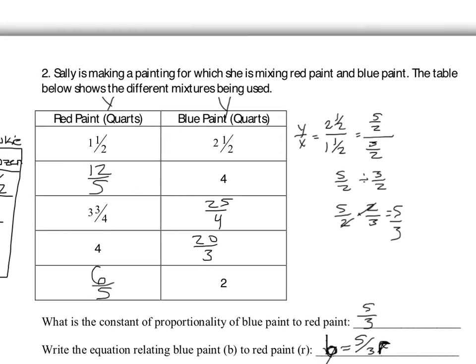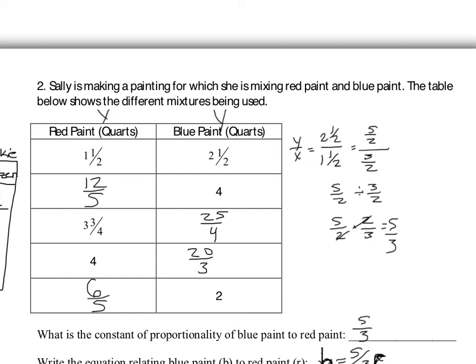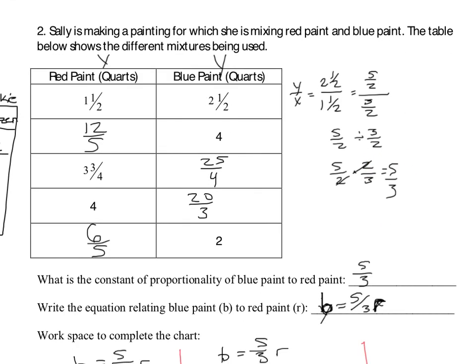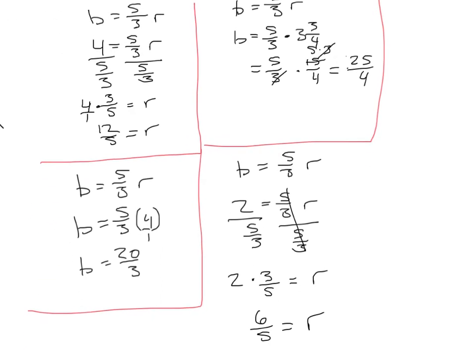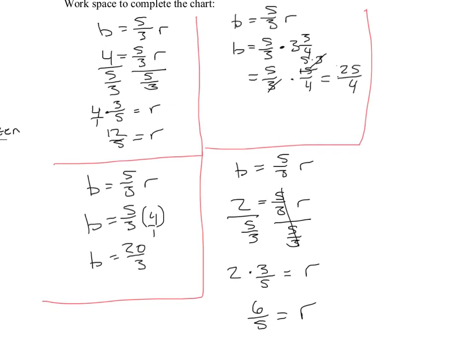Moving on to the second problem, I've labeled red paint as X and blue paint as Y. So Y over X is two and a half over one and a half. Doing the arithmetic gives a constant of proportionality of five-thirds, and the equation is: blue paint B equals five-thirds times the red paint R. Plugging the given values into the equation and solving with a bit of arithmetic gives the solutions shown.